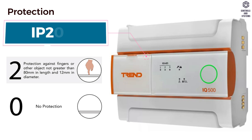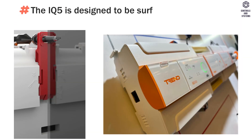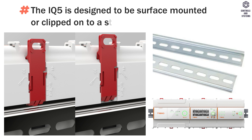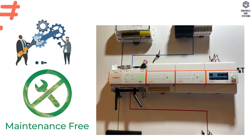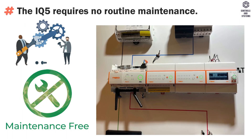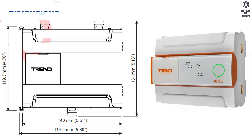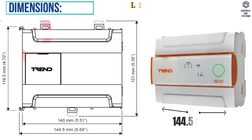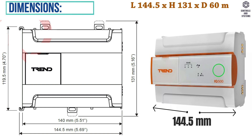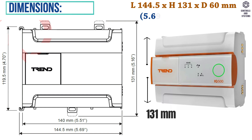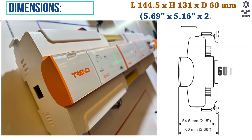Protection is IP20. The IQ5 is designed to be surface mounted or clipped onto a standard DIN rail. The IQ5 requires no routine maintenance. Dimensions: length 144.5 mm, height 131 mm, depth 60 mm.